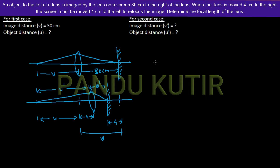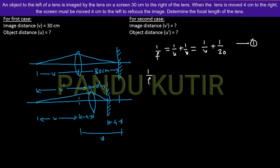Now we will start with the first question. In the first question, the lens formula is used: 1/u + 1/v = 1/f. For the second question, u-prime is equal to 1 by u plus 1 by v, using the same lens formula.